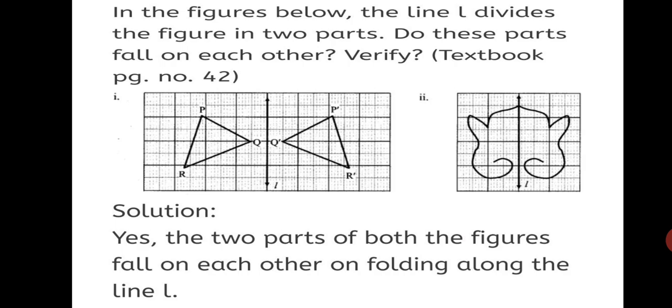Let's have a look at the second figure. If you fold the figure then the two parts will exactly fall on each other? Yes. So your final solution will be yes, the two parts of both the figures fall on each other on folding along the line L. So this is just an activity from the textbook. Now let us solve practice set 21.